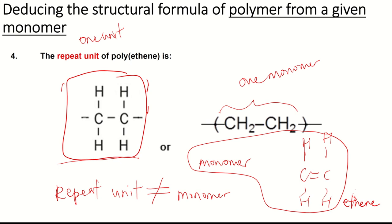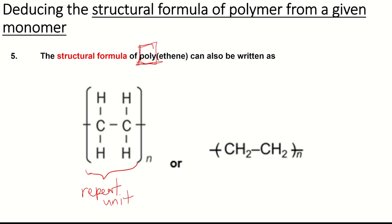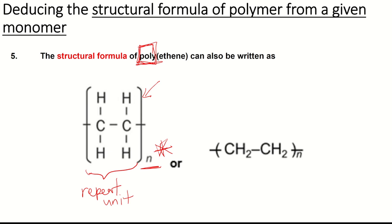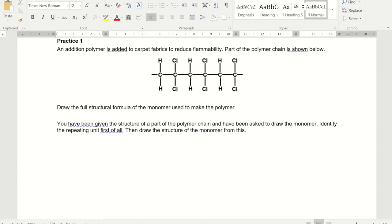The structural formula of polyethene is written as one repeat unit inside brackets with a subscript n, meaning the unit repeats n times. You must include the brackets. The repeat unit repeated n times represents the polymer. When asked for the structural formula of a polymer, draw the repeat unit in brackets with subscript n.